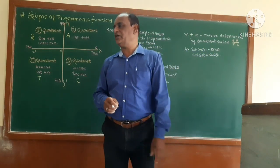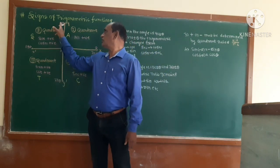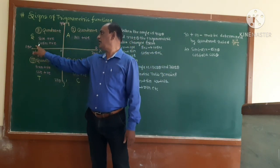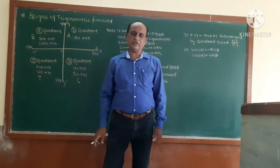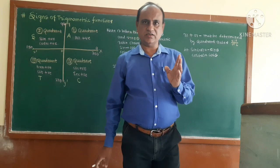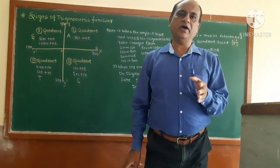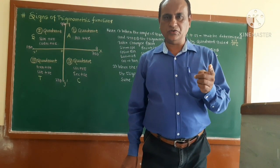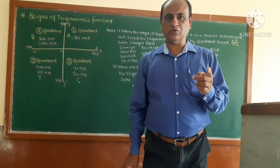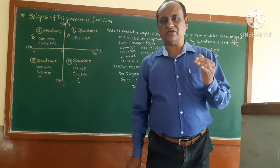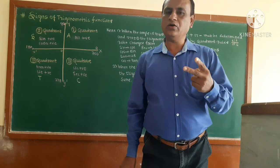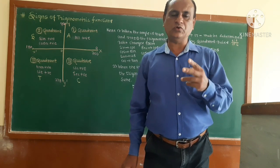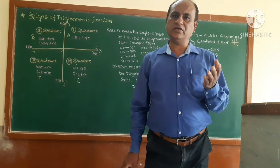Then from 90 to 180 degrees, the angle lies in the second quadrant. In the second quadrant, only sine is positive, and since cosec is 1/sine, cosec is also positive. So out of the six trigonometric functions in the second quadrant, two are positive.